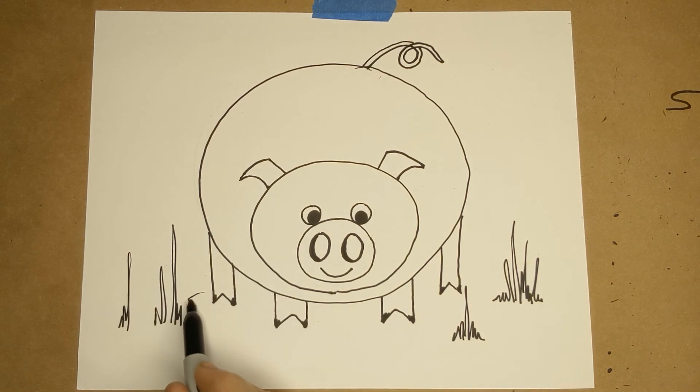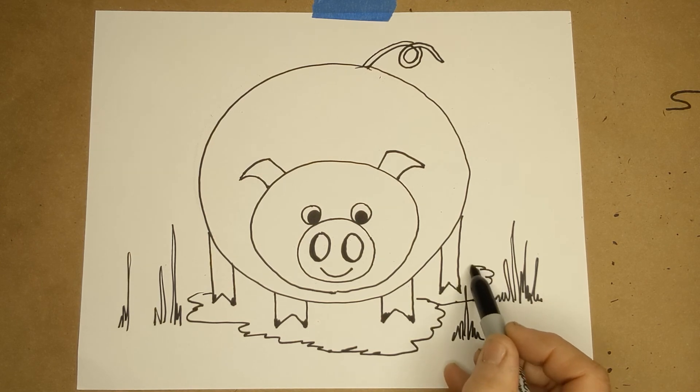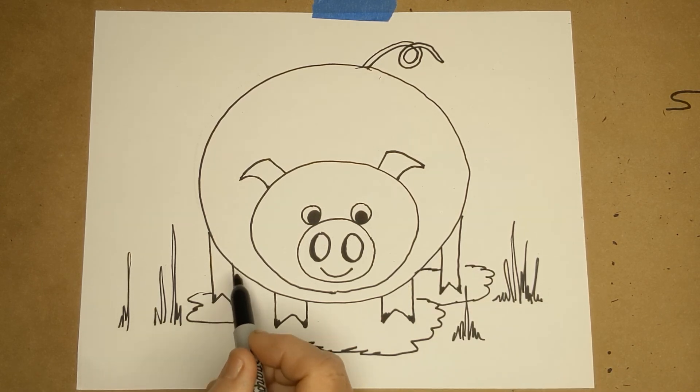And you might even want to put a nice little mud puddle underneath him. Look how I keep the lines kind of flat and wavy so he can play in this cute little mud puddle. Oh, look at that, he's very happy.